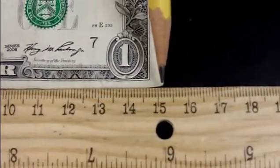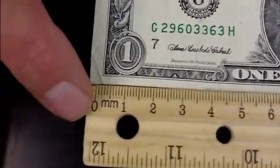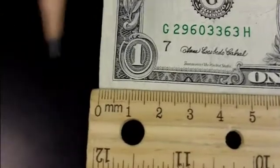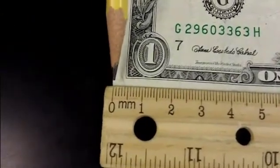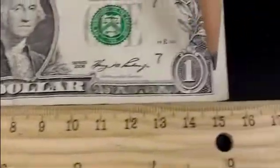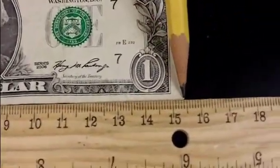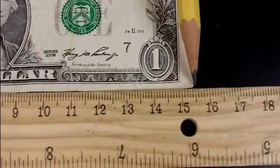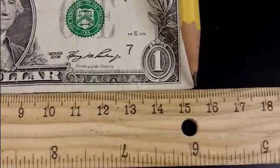The proper way to measure something is you line up the object with the very first line. Then, let's look at the end again. And notice, this dollar bill is 15.5 centimeters long.